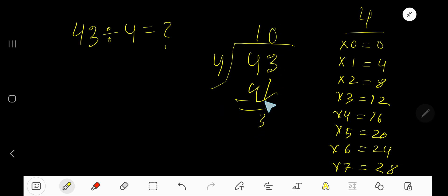4 goes into 3 how many times? 0 times, as 3 is less than 4. 0 times 4 is 0. Subtract 3. So our answer is 10, remainder 3.